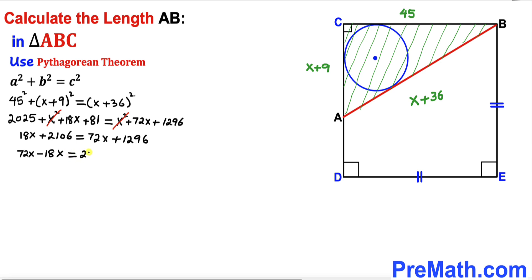Now let's divide both sides by 54. Therefore, our x value turns out to be 15 units.